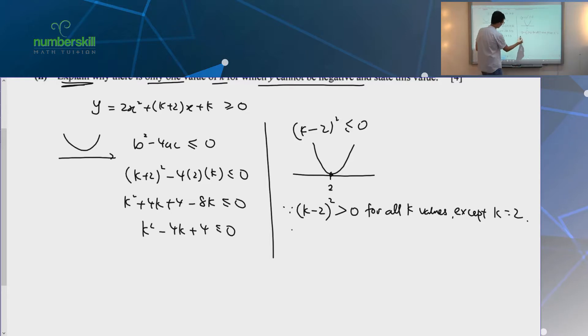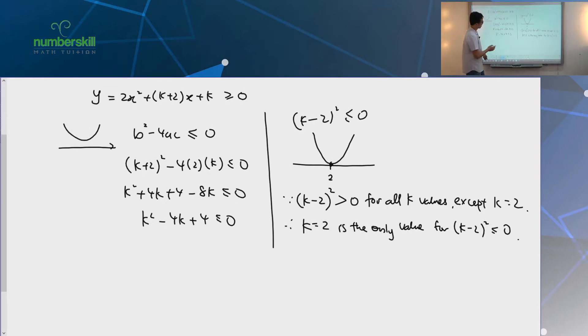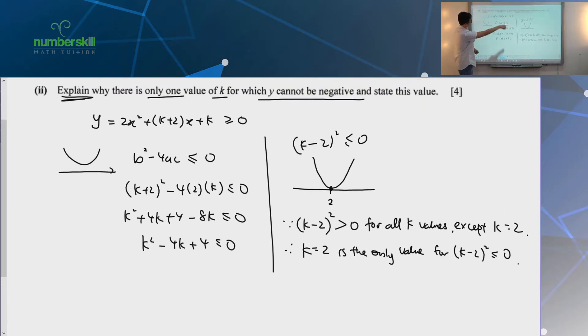So, therefore, k equals to 2 is the only value for k minus 2 square to be less than or equal to 0. That's the only chance you have to make it equal to 0. It will never be negative. You know it for sure. Right? No way it can be negative. No way. But it can only be equal to 0. And, of course, that answers the next part of the question as well.